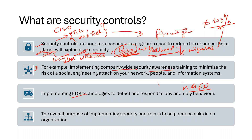For example, from a non-technical perspective, conducting company-wide security awareness training is a security control. We always receive security training emails to be completed periodically — could be monthly or quarterly depending on the company's policy. We are being trained to minimize the risk of any sort of attack, not just social engineering but any threat actor or threat vector exploiting something, making sure we reduce that risk from a people and process perspective.